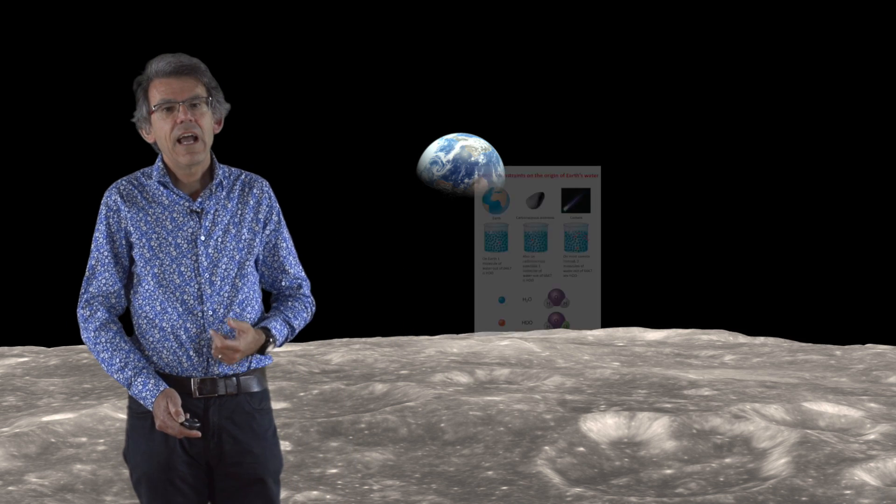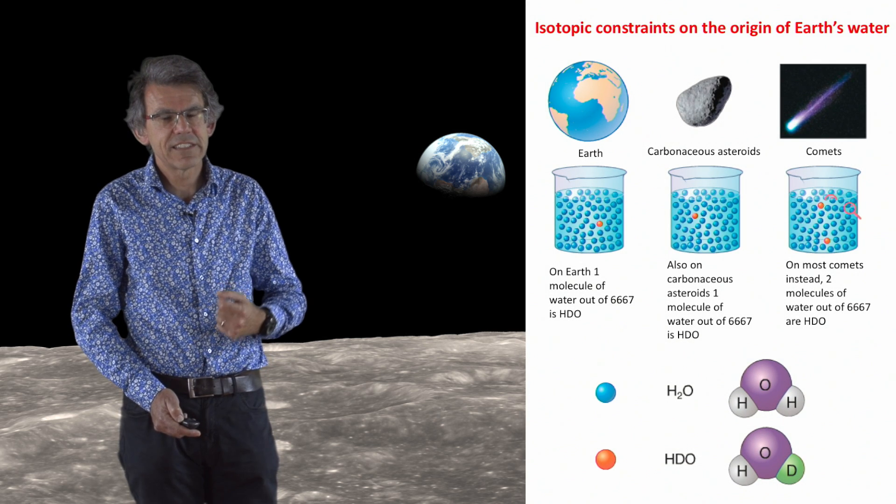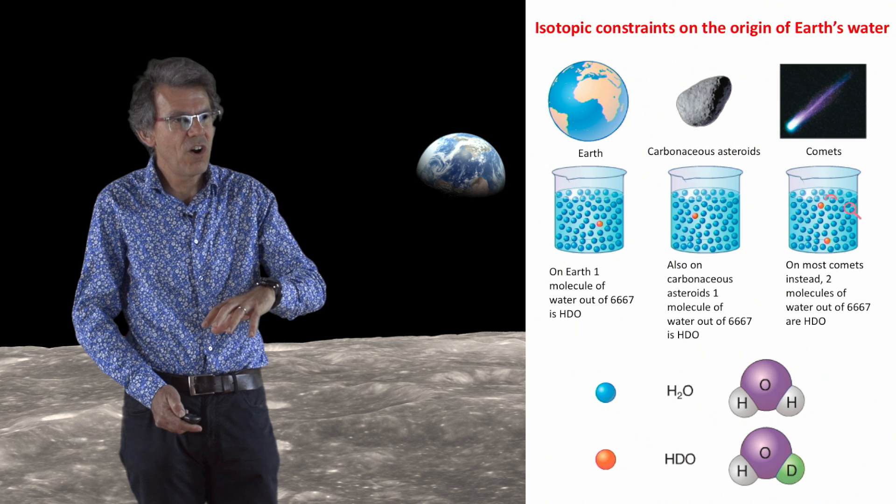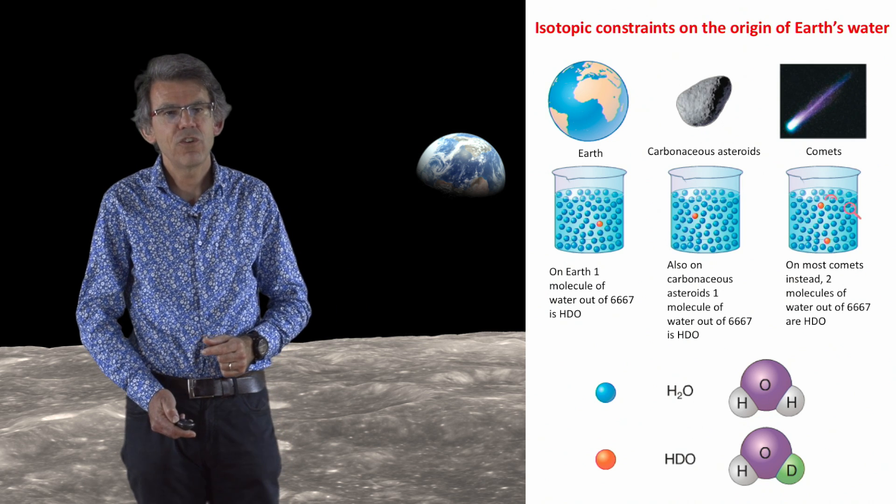And these planetesimals could be carbonaceous asteroids or maybe even comets. Isotopes can give us some important information to discriminate between carbonaceous asteroids and comets as the main deliverers of water to the Earth.